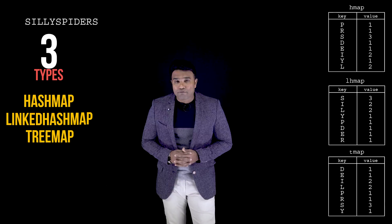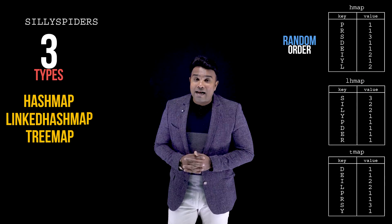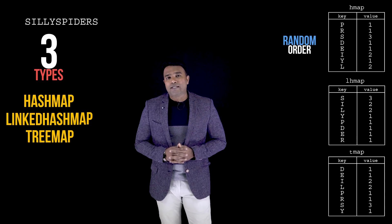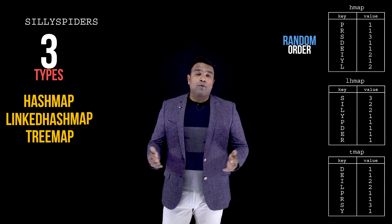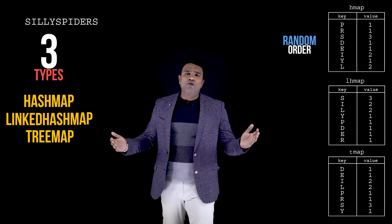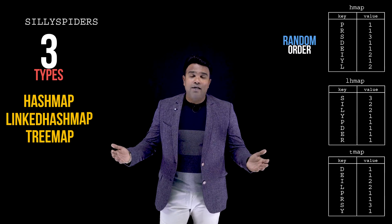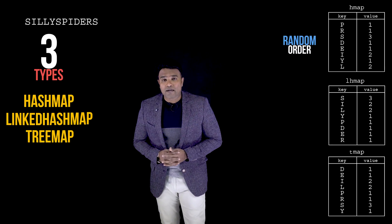If you notice carefully, the HashMap holds the data in some random order. I should caution viewers here that the HashMap wouldn't actually hold it in a random order — rather, it makes use of an inbuilt hash function to store the data. But since I won't be discussing the hash function in depth here, for a programmer it might appear as though the HashMap is holding it in some random sequence.